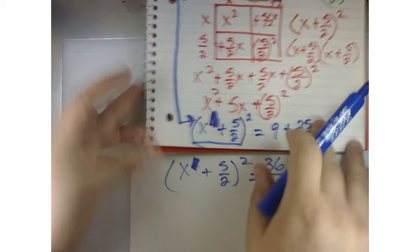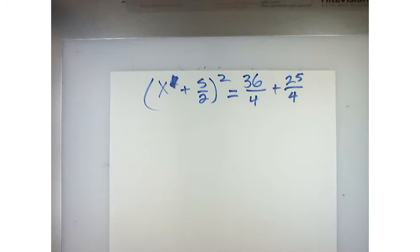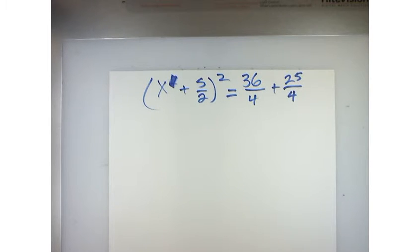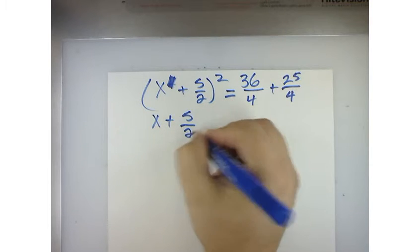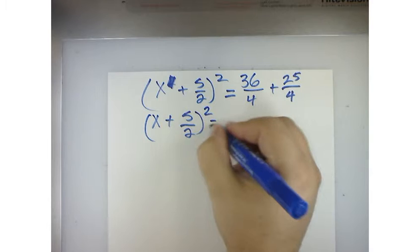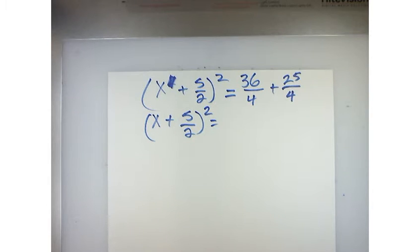Yes, Mr. Adams. So, this is where we're at. Well, that would be x plus 5 over 2 squared is equal to, what's 25 plus 36? 61 over 4.